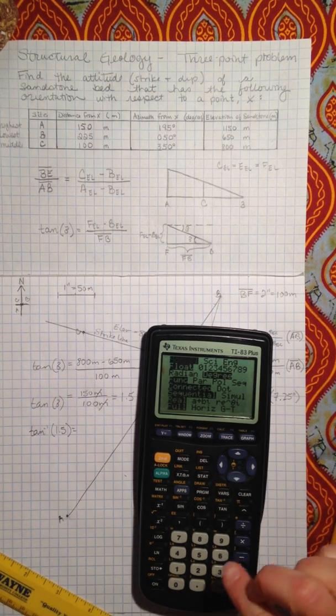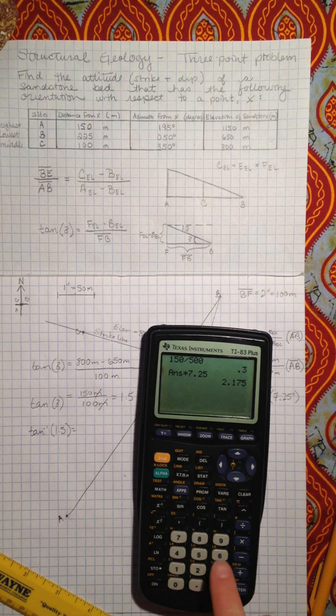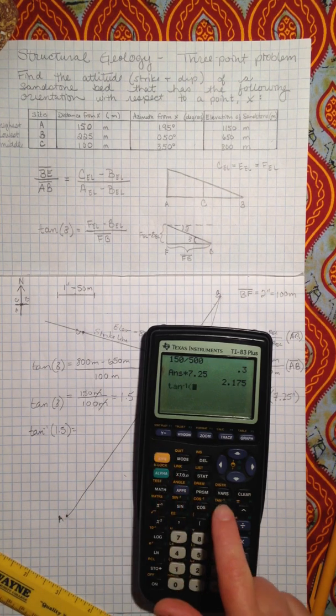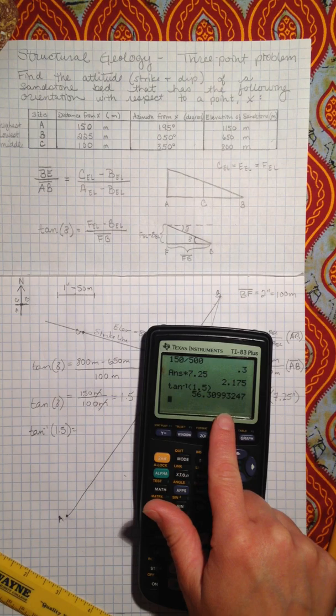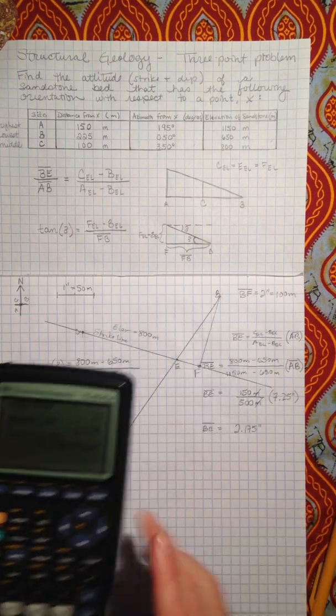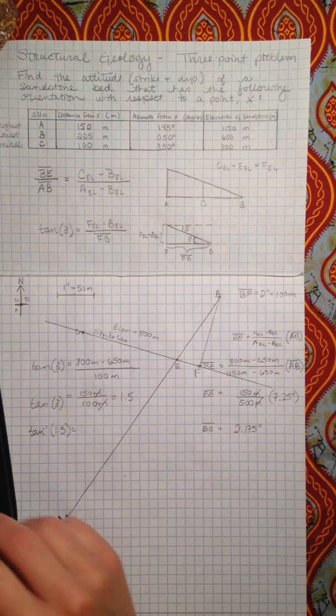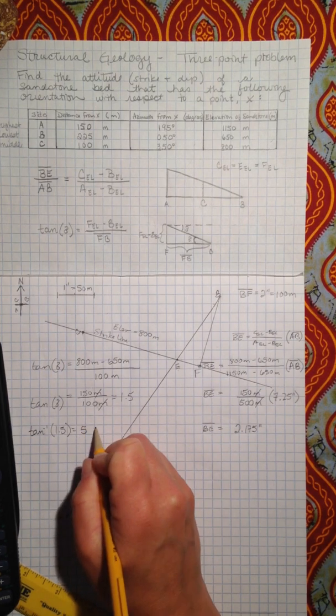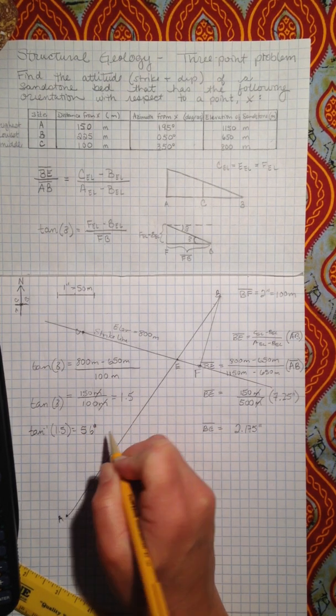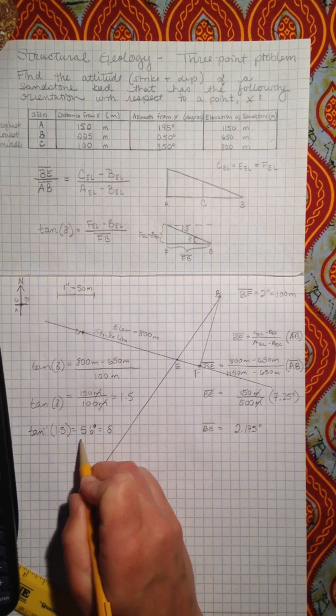Okay. And so we're going to do inverse tangent of 1.5 equals 56.3 degrees. There is no way my graph is precise enough to know that it's exactly 56.3 degrees. So I'm just going to go ahead and say that my dip equals 56 degrees.